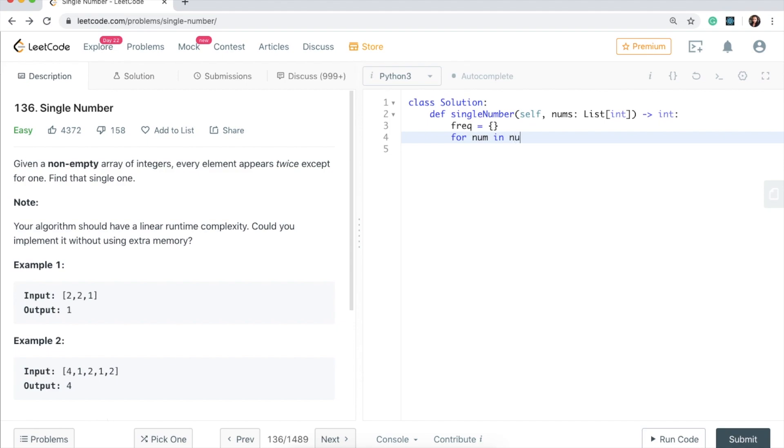So we'll say for num in nums, I'm going to check if that number is not in frequency, then what I'm going to do is index by that number. So I will say frequency num is equal to one.